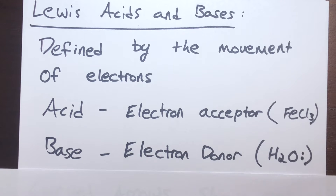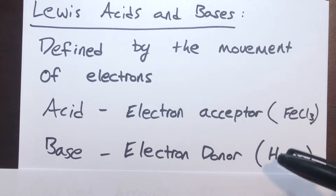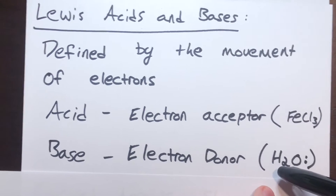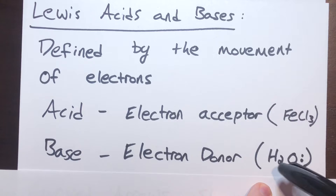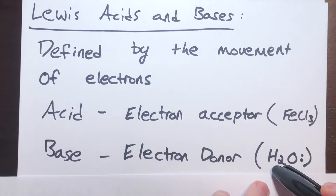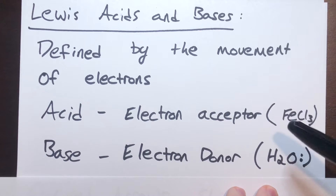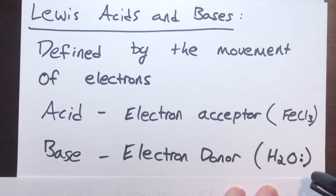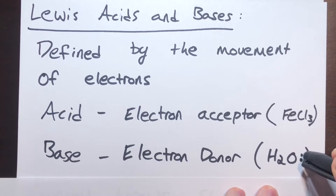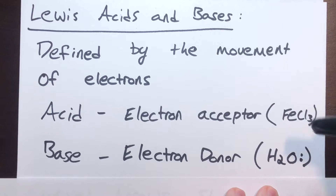This can be a little confusing because it depends on which definition you're using. Water could be an acid or a base — it always depends on which definition you're working with. So if we're talking about Lewis acids and bases, the lone pair on water is going to act as a base that can be used to go somewhere else and create a new bond.